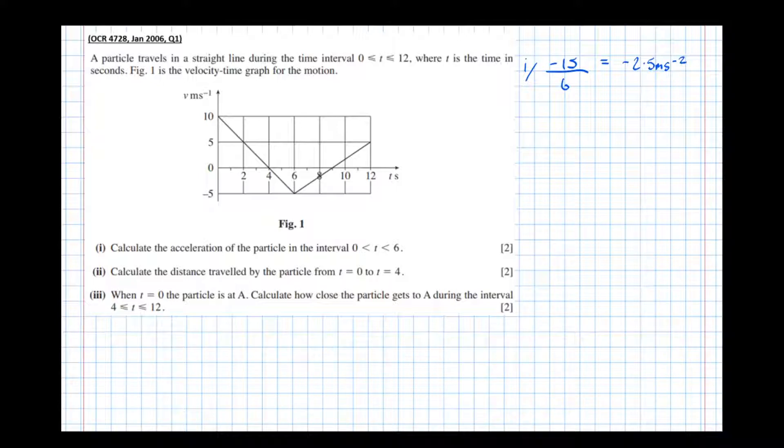Integration finds the area between the curve or in this case the line and the x axis. So what we need to do is find this area here between t equals 0 and t equals 4. Find the area of that triangle.